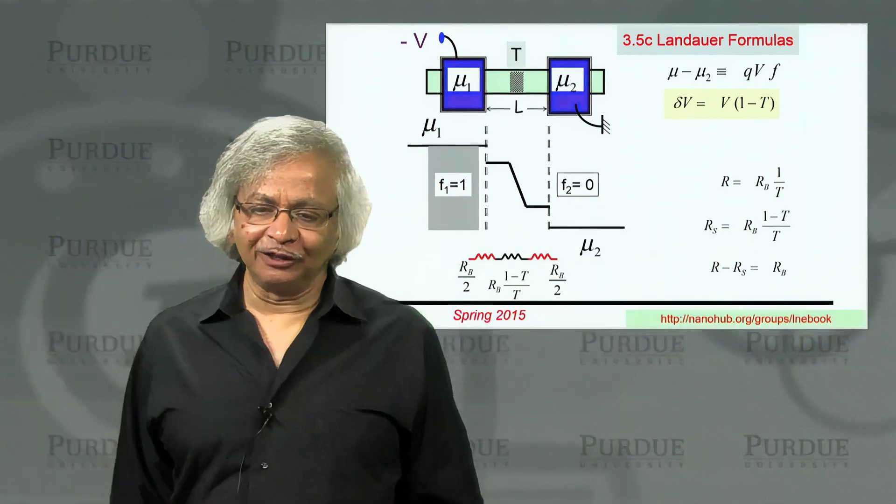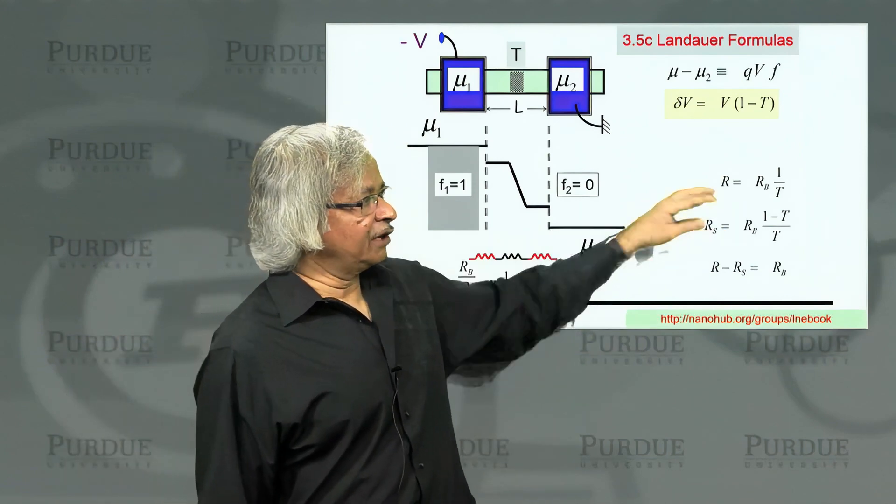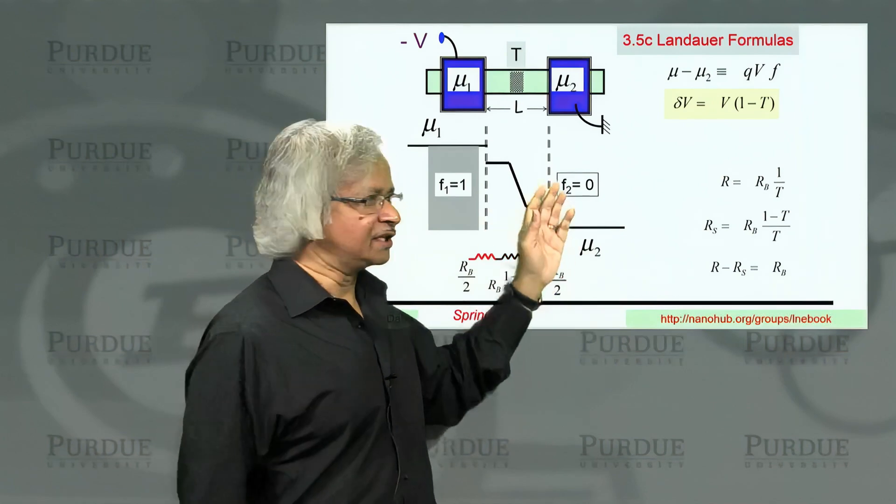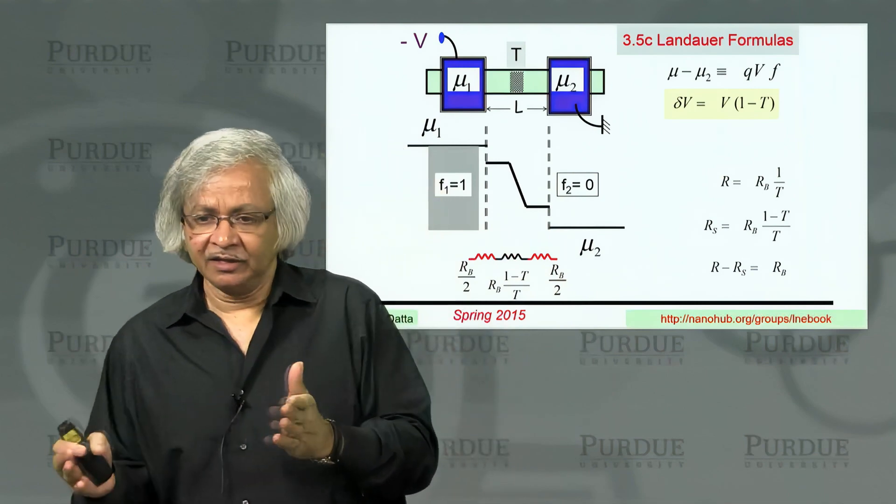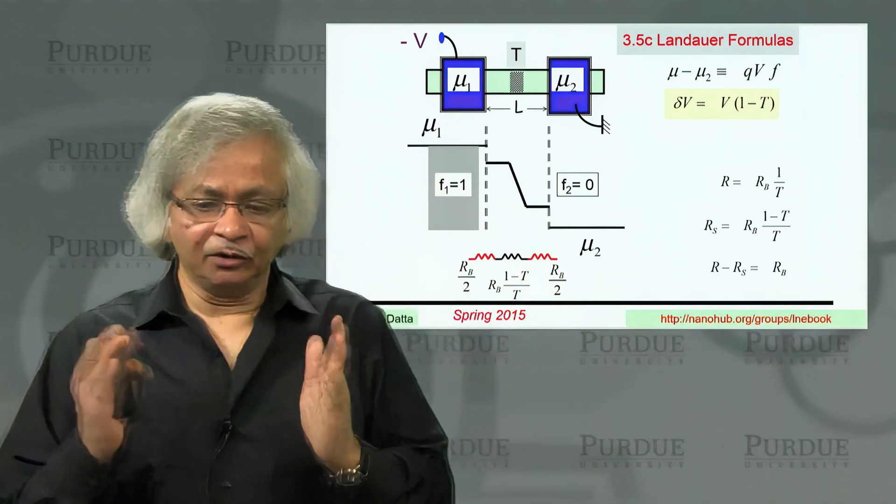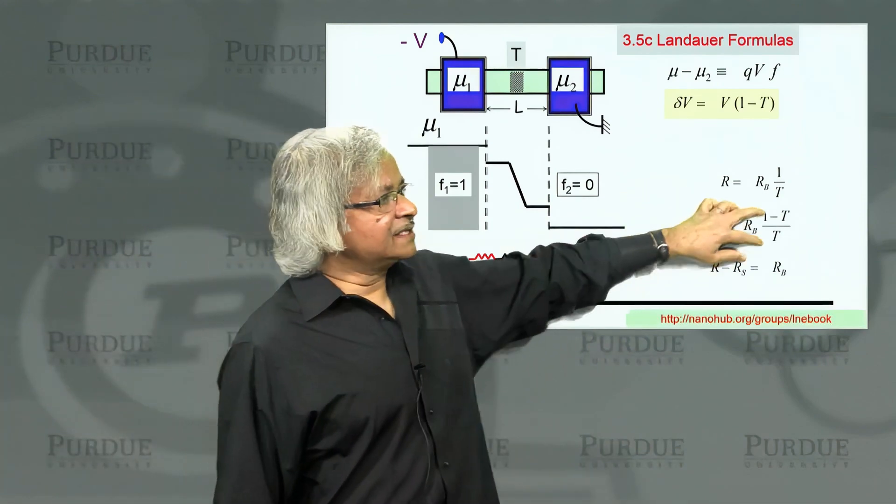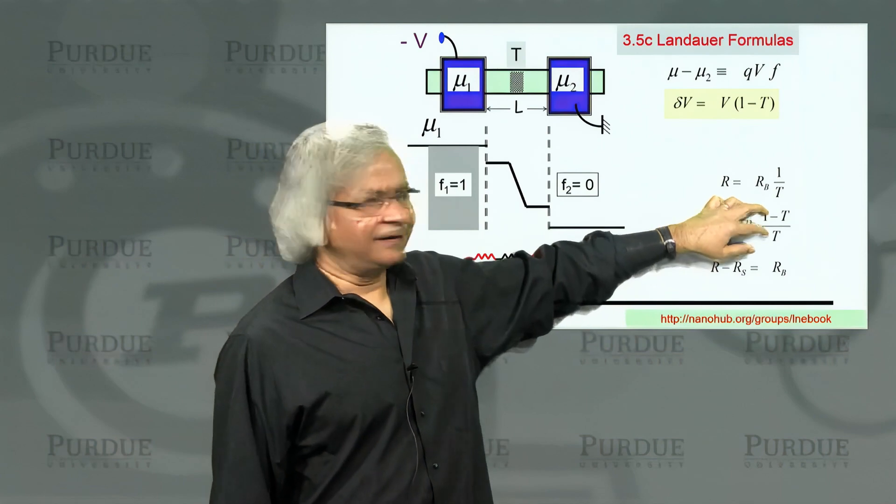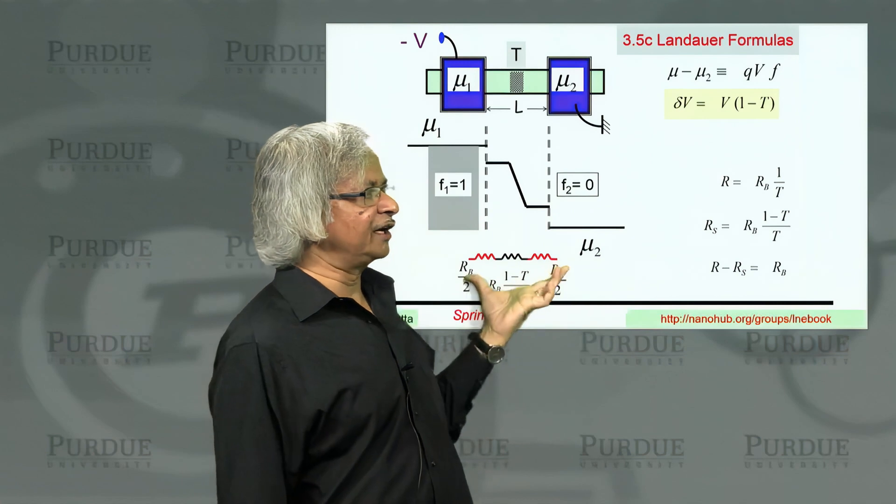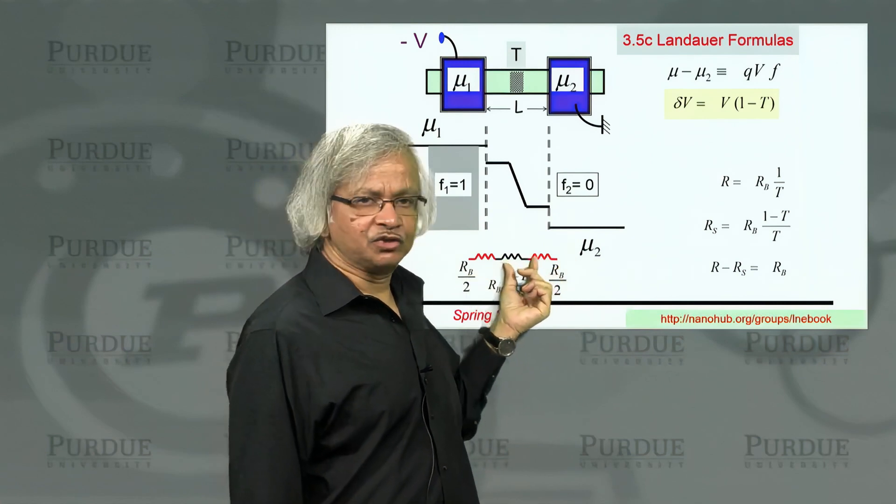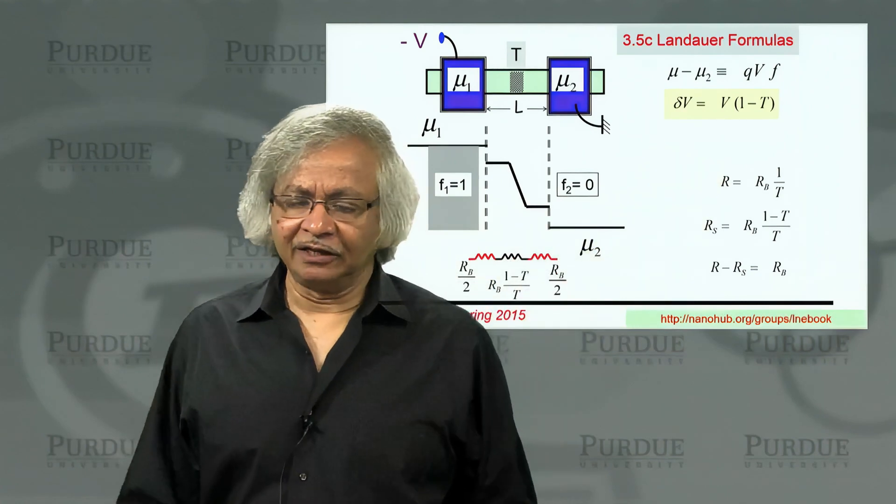The important thing is that the overall resistance is 1 over T, whereas the resistance associated with the scatterer itself is 1 minus T over T. These are what you could call the Landauer formulas. Landauer had appreciated many of these subtle issues, although this interface resistance took much more discussion and people credit Imry with recognizing this interface resistance in this context. But this is the original Landauer formula, whereas these days often people use this one to interpret results because usually you're looking at the total resistance.